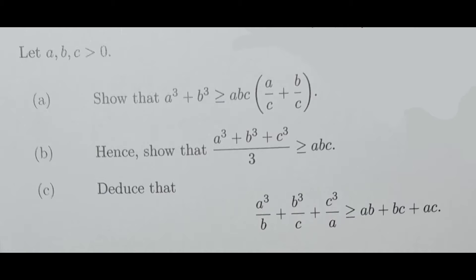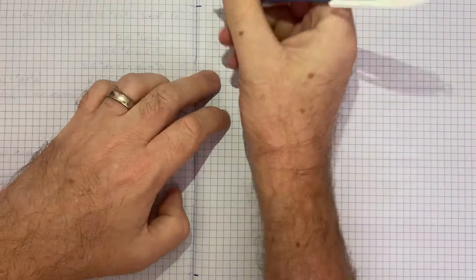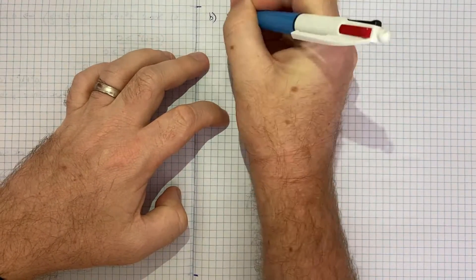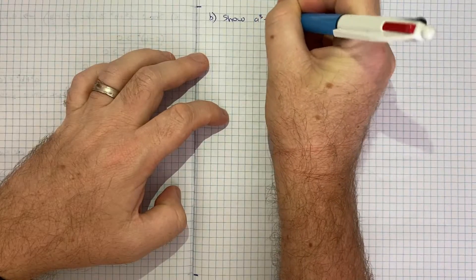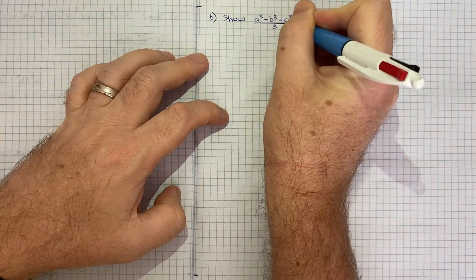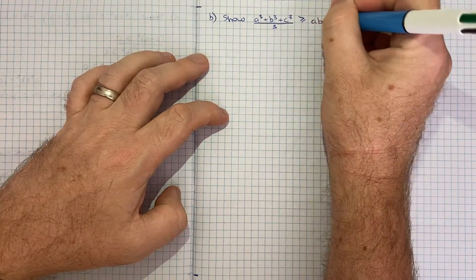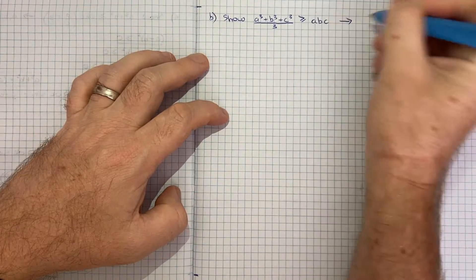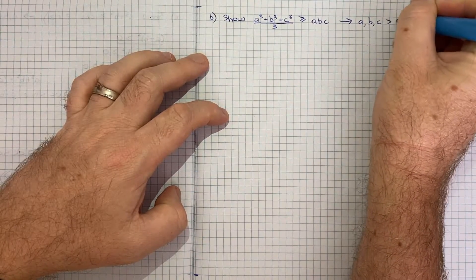I'll work through part B in this video and then take a look at part C in a follow-up video. Part B wants us to show that (a³ + b³ + c³) / 3 is greater than or equal to abc, remembering that a, b, and c are all greater than zero.